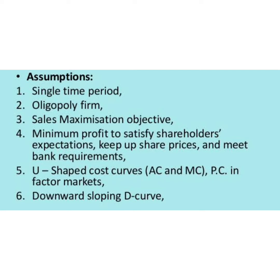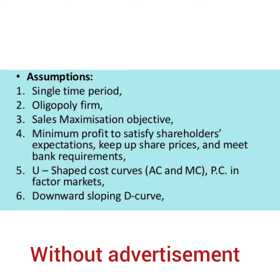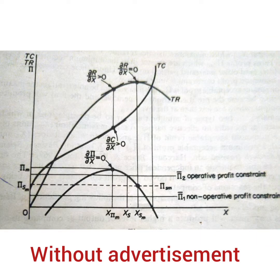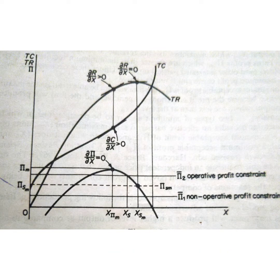Now we shall go on to the first model — the single period model without advertisement, dealing with a single product. For this we use a diagram with TR and TC curves, with X and Y axes clearly given. The traditional U-shaped models are present. The total cost curve is TC and the total revenue curve is TR. The sales revenue — that is TR — is at its maximum level at the highest point of the TR curve, where price elasticity of demand is unity.